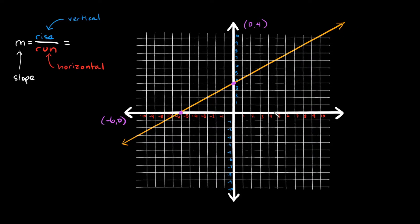Starting from the left point and moving to the right one, we go up one, two, three, four spaces, and then over one, two, three, four, five, six spaces. So we go up four and then over six. The slope of this line is four over six, which we can reduce to two over three.